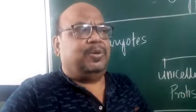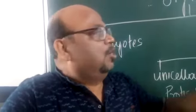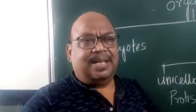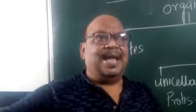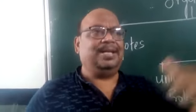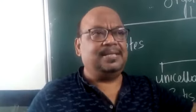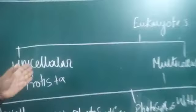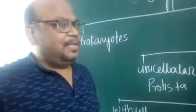Eukaryotes are very developed. We can talk about two types: prokaryotic cells and eukaryotic cells. Eukaryotic cells can be seen in two types — unicellular and multicellular. If an animal is made of just one cell, like amoeba, we call it unicellular.